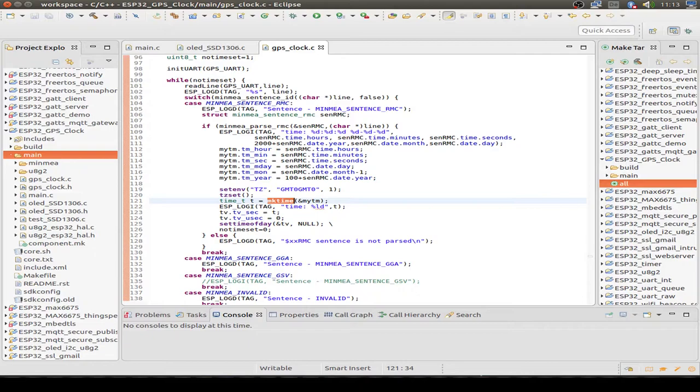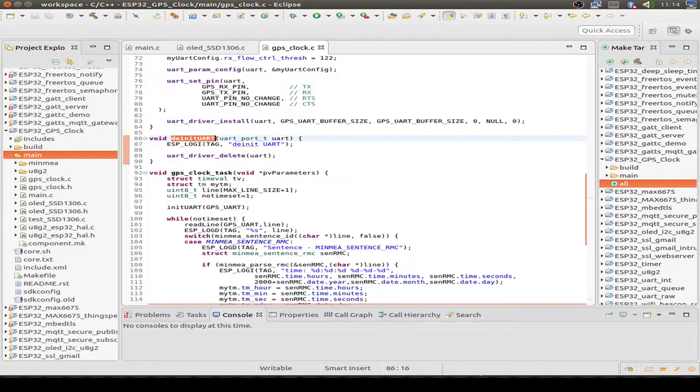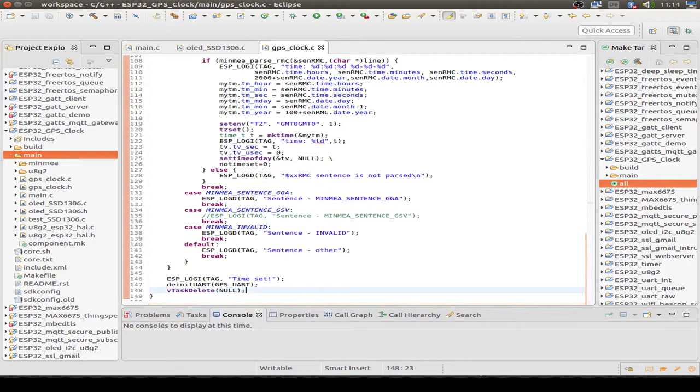With mktime, we create a UNIX timestamp. We use the set time of day function to set the actual ESP32 time. Then we leave this loop and de-initialize the UART peripheral. With this function, we just delete the driver and then we destroy the task. And that's it.